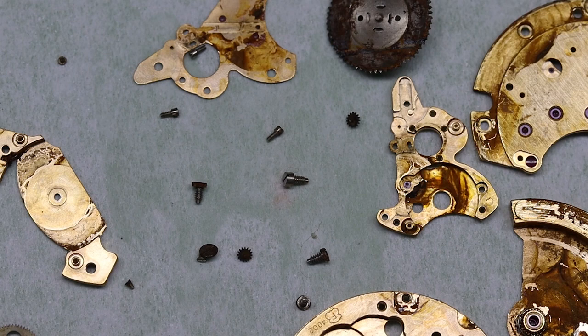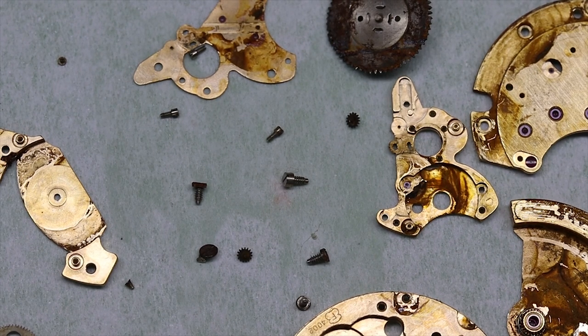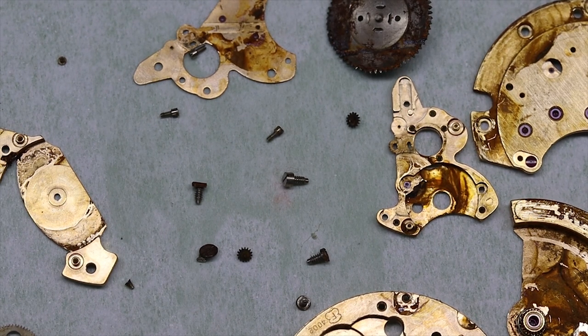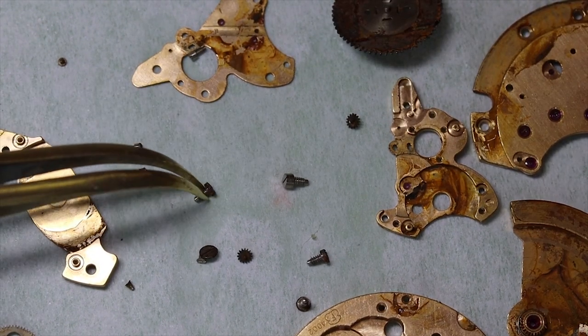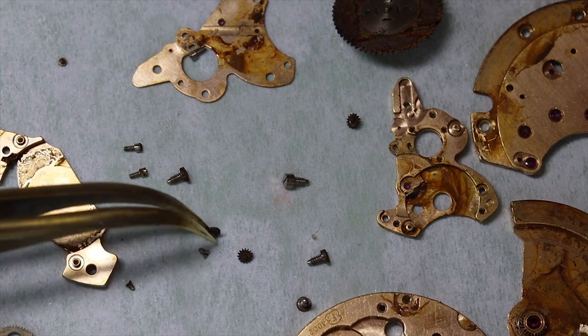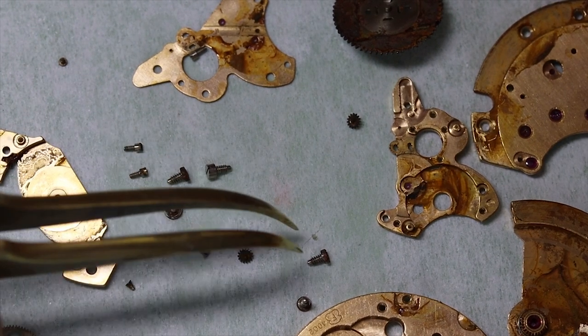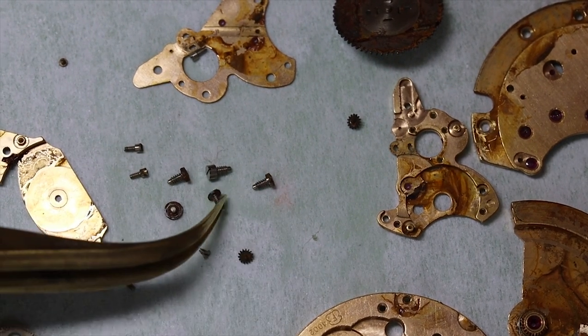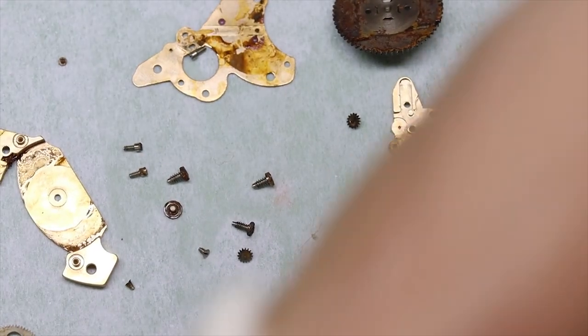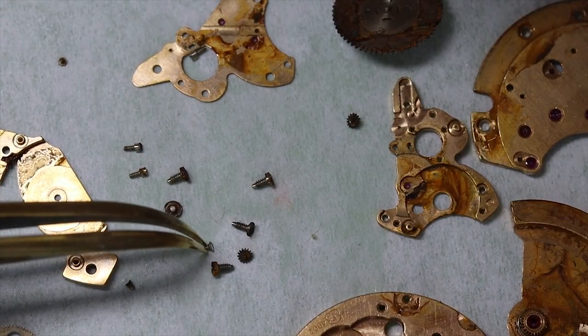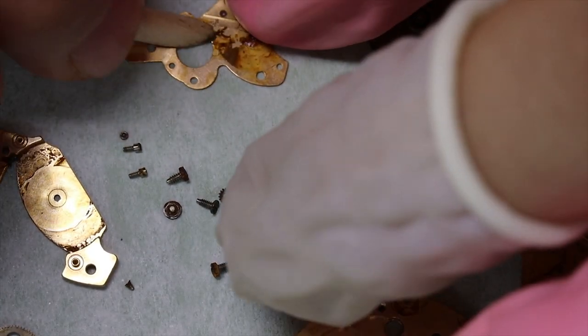All right, let's see now what we can do about these parts. We see quite a few of the screws are very rusted. Most of them are actually in usable condition, but some are not. So let's put away the ones we can use. Then we'll have to try to find some that fit for the rest.